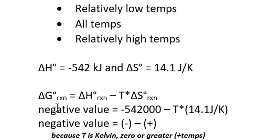Delta G reaction equals delta H reaction minus T delta S reaction. We'll substitute the values of delta H and delta S into this equation and vary the temperature term. Remember, Kelvin temperatures are always positive.